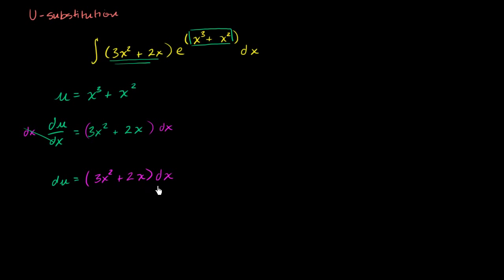Now why is this over here? Why did I go through the trouble of doing that? Well, we see we have a 3x squared plus 2x, and then it's being multiplied by a dx right over here. I could rewrite this original integral as the integral of 3x squared plus 2x times dx times e to the x to the third plus x squared.